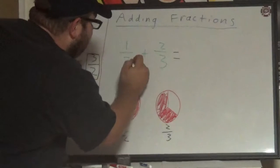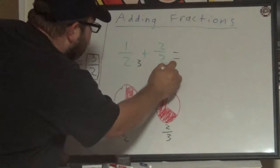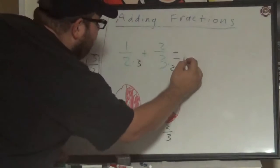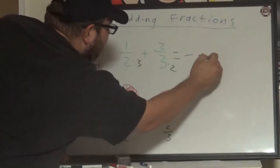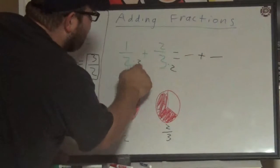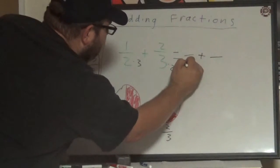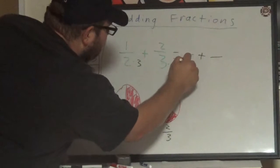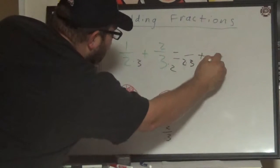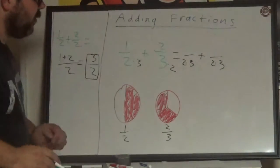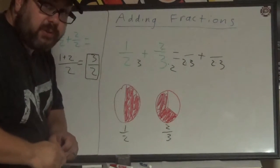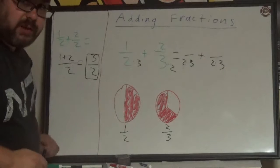I'm going to rewrite the problem with a new denominator. Two times three, I'm going to put under both as both denominators. We'll simplify that in a moment.